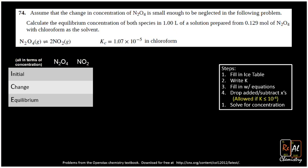All right, so here is a typical ice table problem. It says, assume that the change in concentration of N2O4 is small enough to be neglected in the following problem. Well, that's just telling us we can drop X, and we'll get to that point in just a minute. And then it says, calculate the equilibrium concentration of both species in one liter of solution prepared from 0.129 molar N2O4, with chloroform as the solvent.